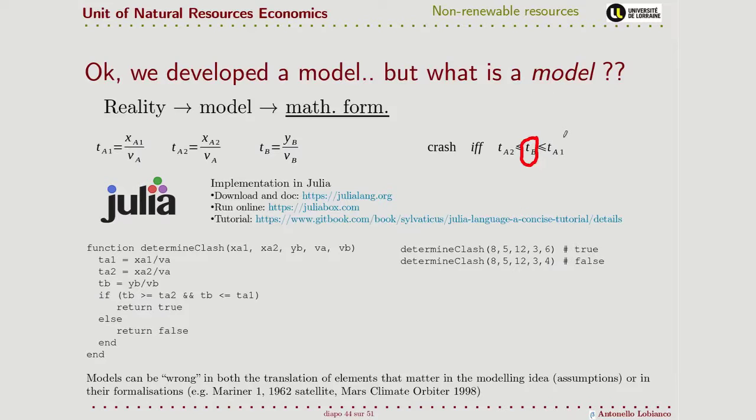Models can be wrong either in the assumptions that they make of the real world in order to formalize it and answer the questions, or they could be wrong also in the formalization they give to their model. So the assumptions are correct, but the deductive part of the model is somehow corrupted.